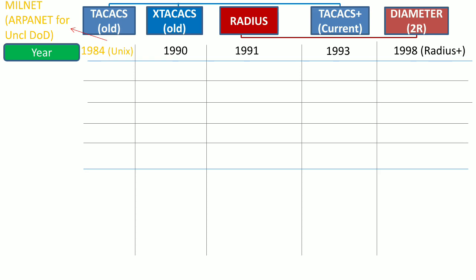As per the general definition of Diameter, it is twice the RADIUS. Therefore, in the context of these AAA services, Diameter is considered twice as good as RADIUS.